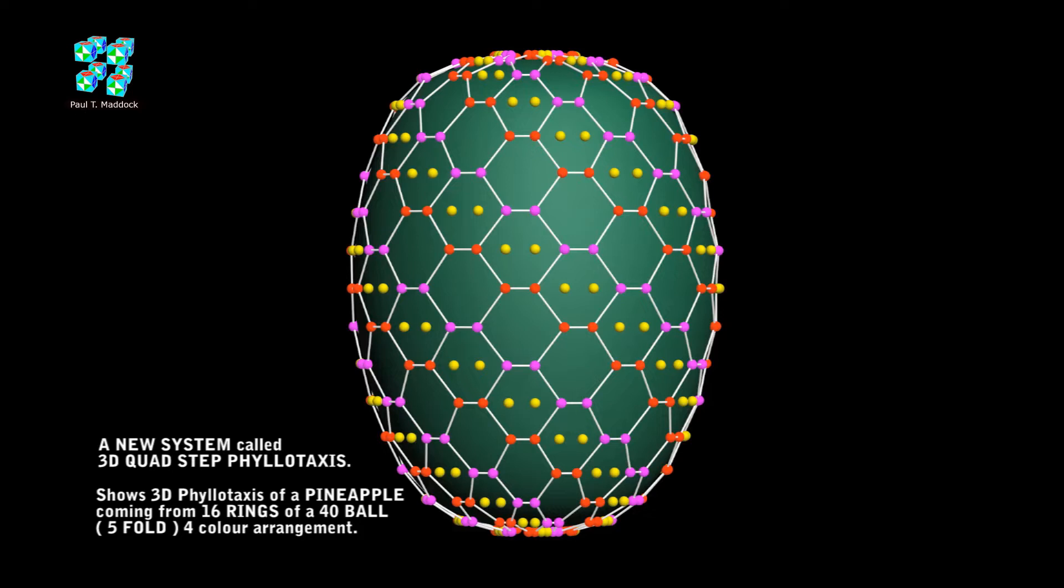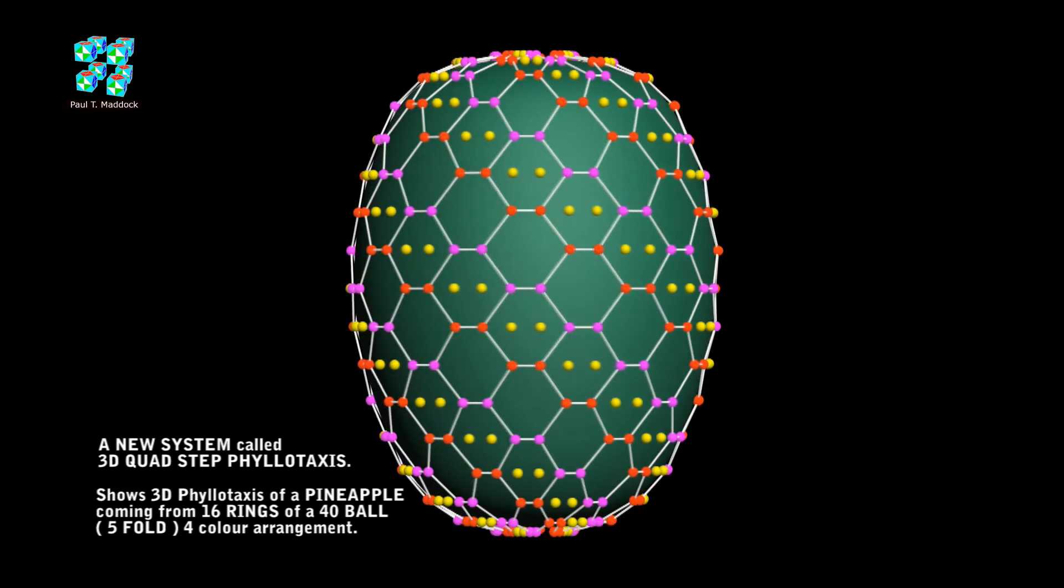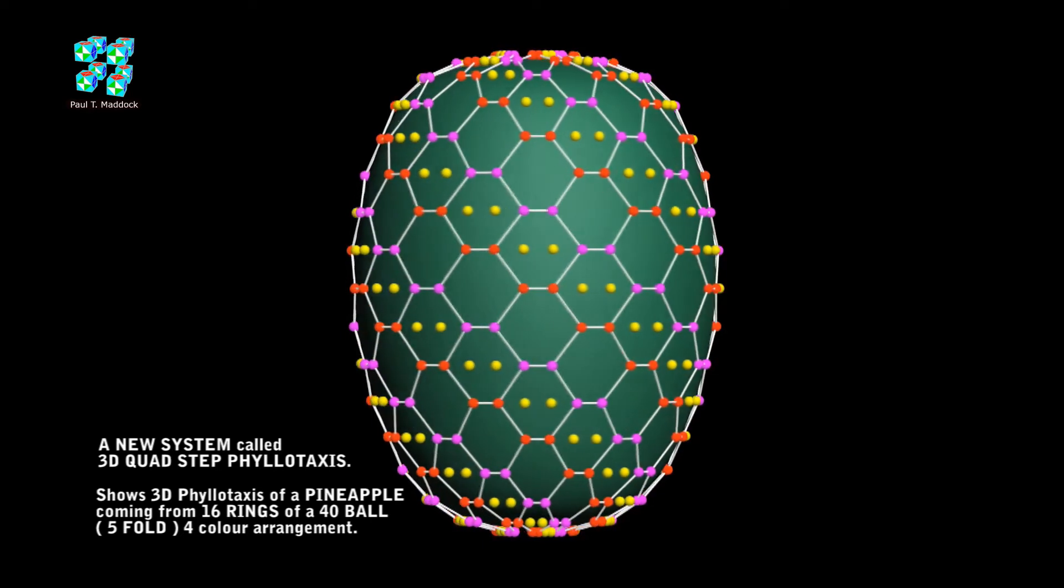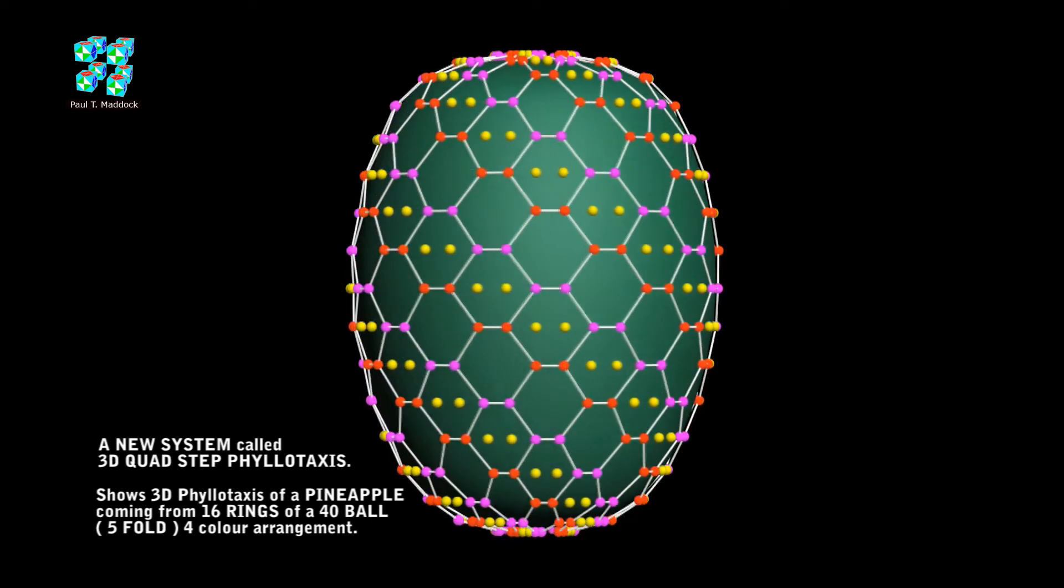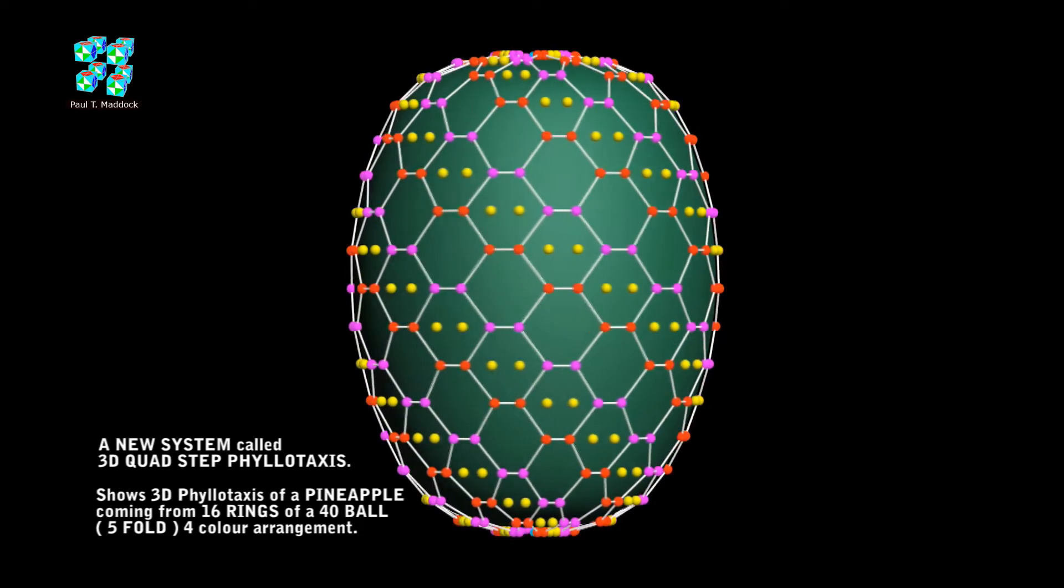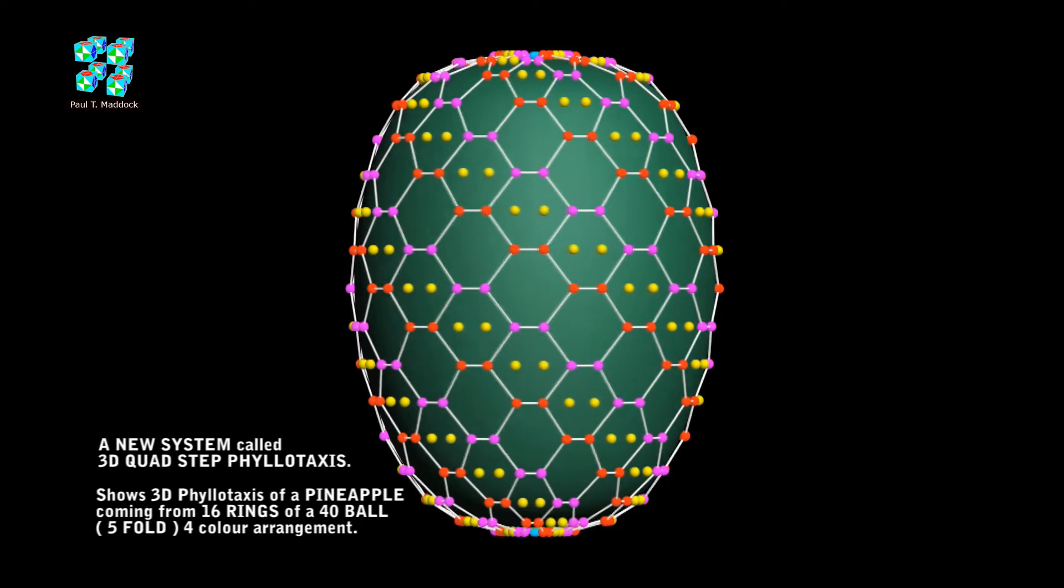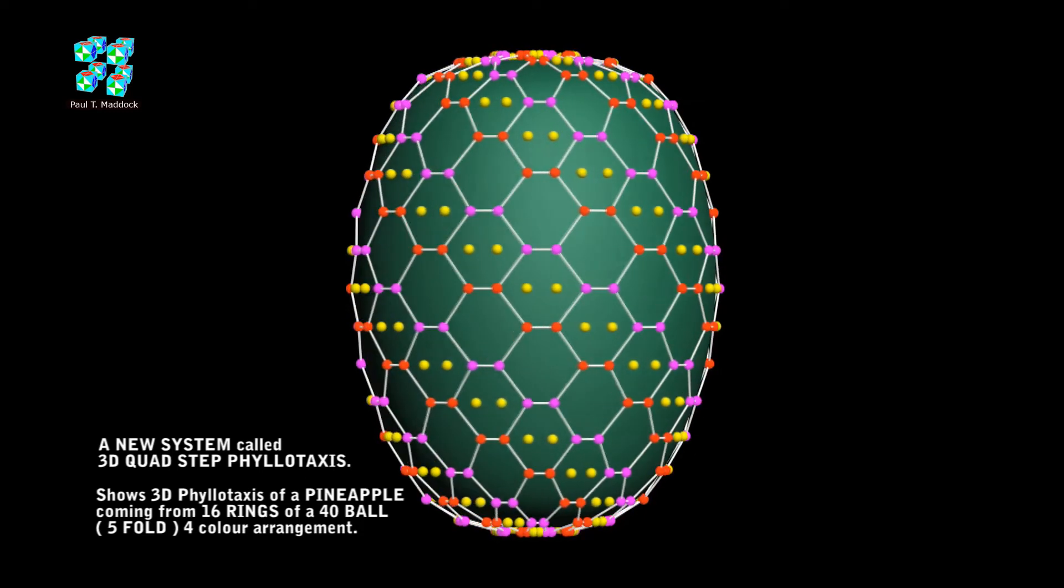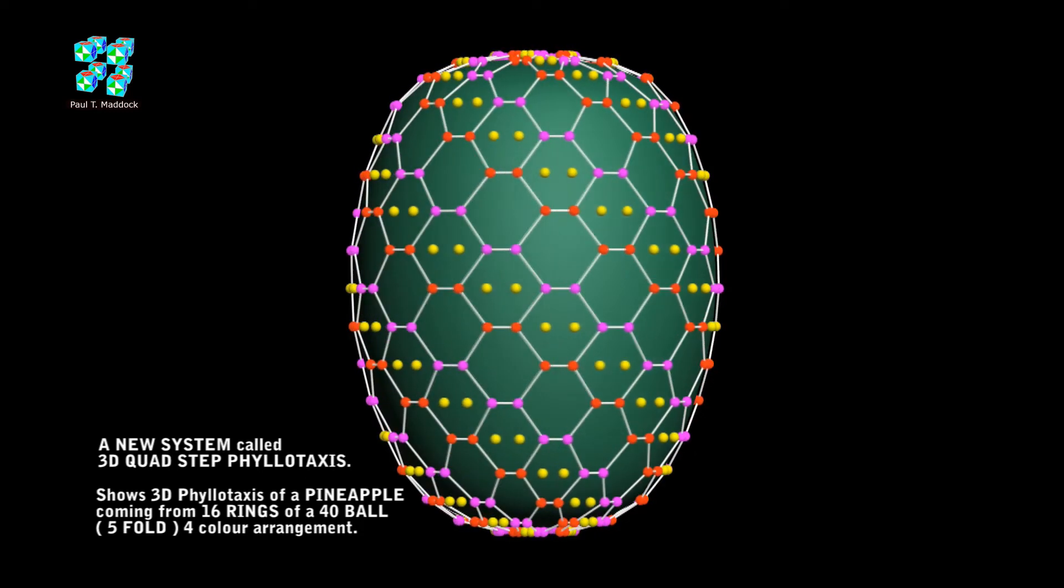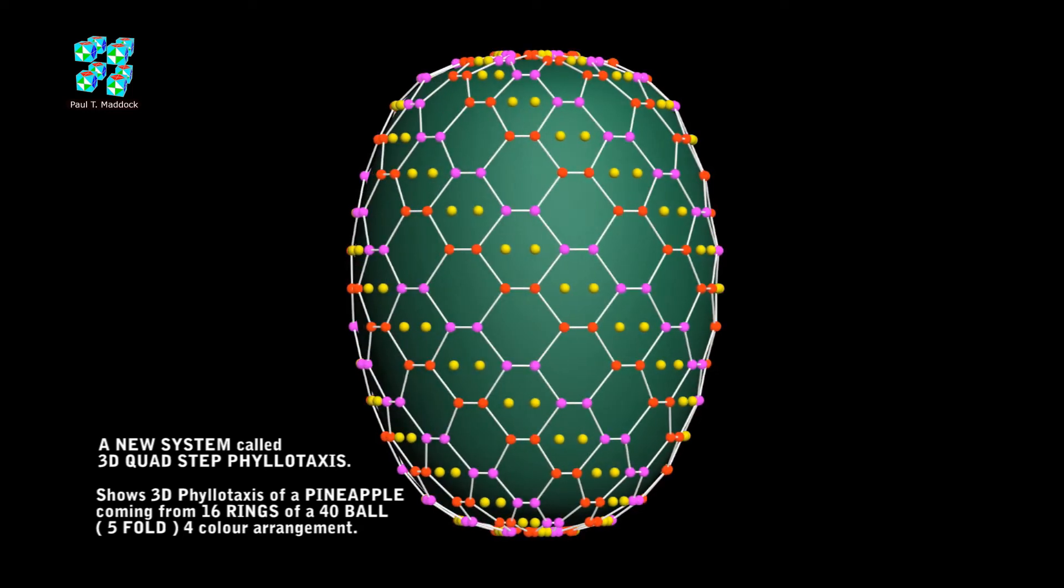Now this shows there are 16 rings on the pineapple with 40 colored balls arranged as I show. I only show three different colored balls on this but the cyan balls are missing. I didn't use them when I was working on the hexagons. You can see that the 3D geometry of the pineapple works out very nice.